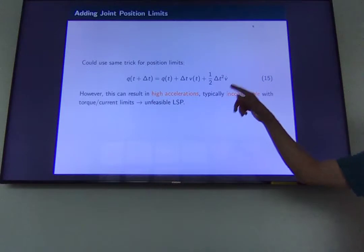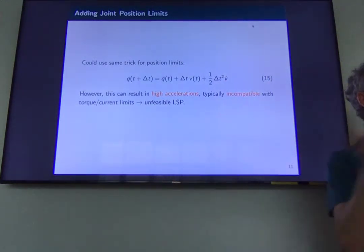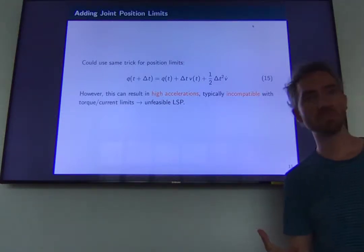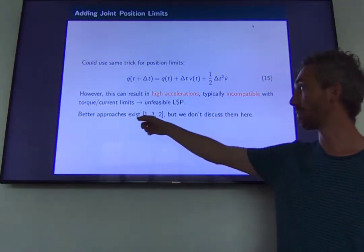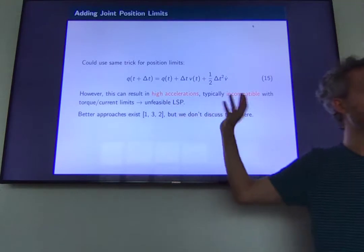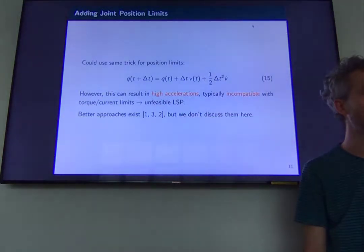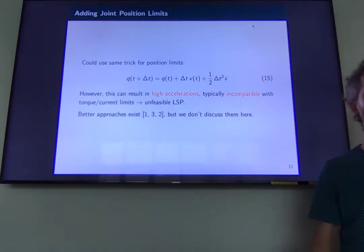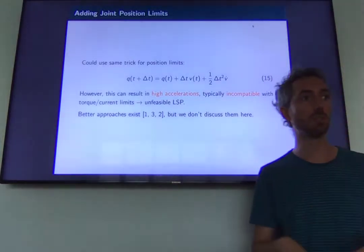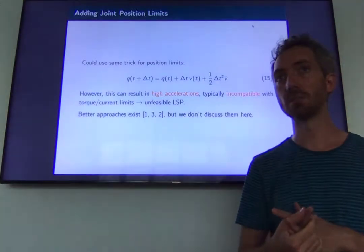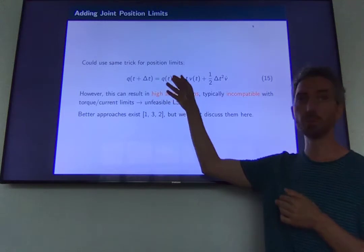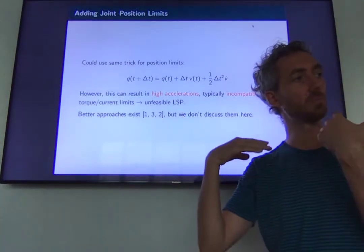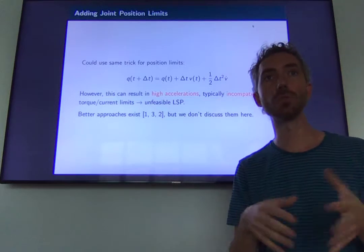The good news is that this is a very stupid way of doing it, and there is a smarter way, but it's a bit convoluted to explain, so I'm not going to explain it in this class. I've added three references in case you're interested, or we can talk about it offline. It would take about half an hour, and it's better to spend time on more general things. Just be aware that there are ways of including joint position limits — we're not going to focus on that in this course.